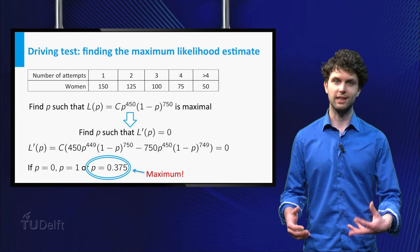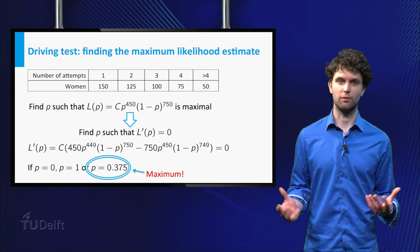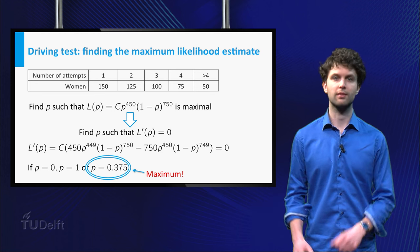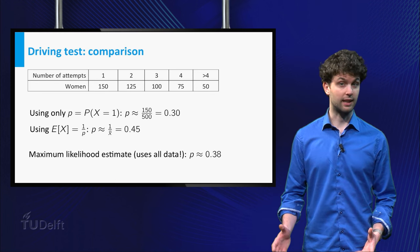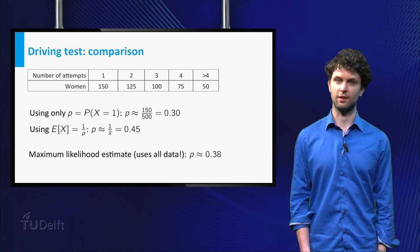So using the maximum likelihood principle, we find 38% as estimate for the success probability of a woman passing her driving test. Note that in this case, the maximum likelihood estimate is indeed smaller than the estimate based on the sample mean.